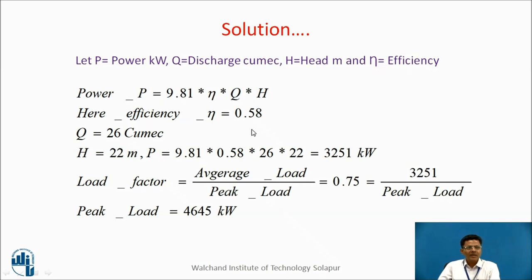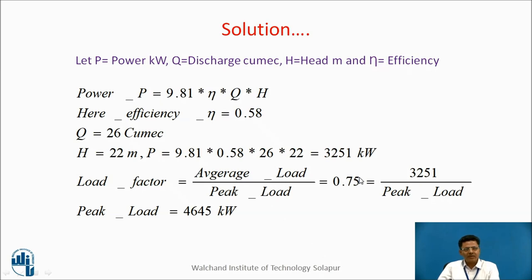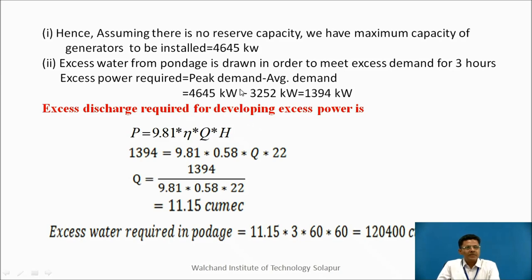Solution: Let P be power in kilowatts, Q be discharge in cumecs, H be head in meters, and η be efficiency. The power equation is: P = 9.81 × η × Q × H. With η = 0.58, Q = 26 cumecs, and H = 22 meters, we calculate P = 9.81 × 0.58 × 26 × 22 = 3251 kilowatts. However, the load factor is given as 0.70. Load factor = average load / peak load. Setting average load as 3251 kW, peak load = 3251 / 0.70 = 4645 kilowatts. Hence, assuming no reserve capacity, the maximum capacity of generators to be installed is 4645 kilowatts.